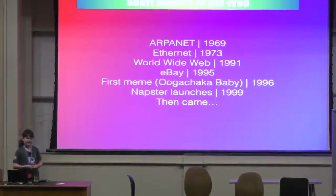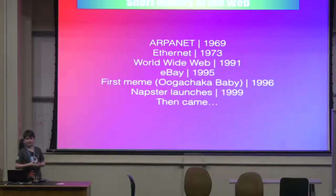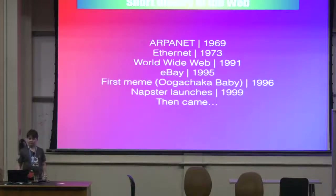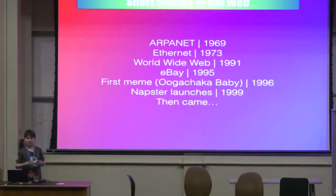In 1973, Ethernet was created. Ethernet was the first consumer-grade way to access the Internet. However, at this time, there was not really that much to access, as the Internet at this time was fairly bare and the content was not organized. This all changed in 1991, when the World Wide Web was created. The World Wide Web was the first structured collection of web pages that made Ethernet an amazing invention that could be used by anyone.